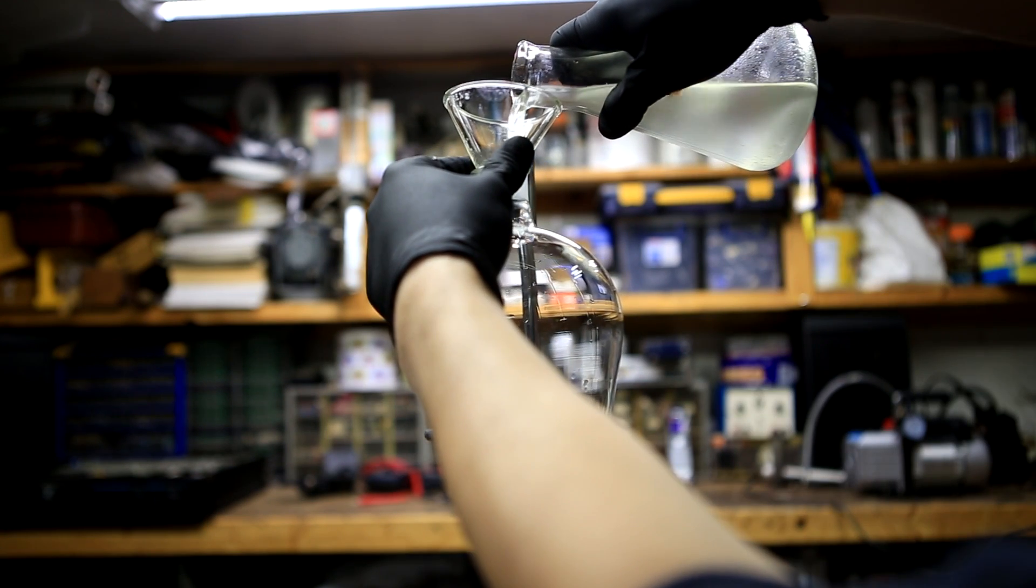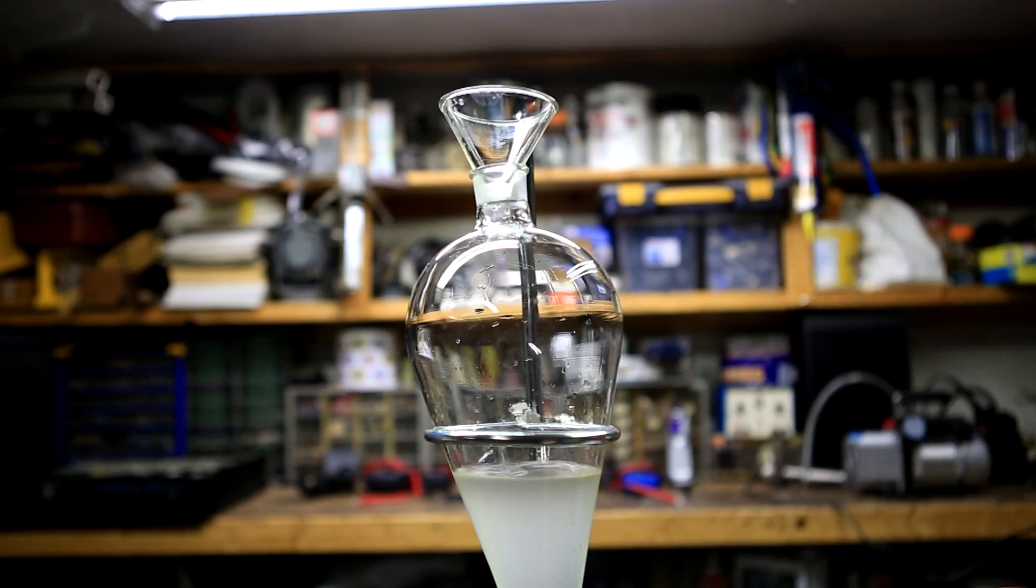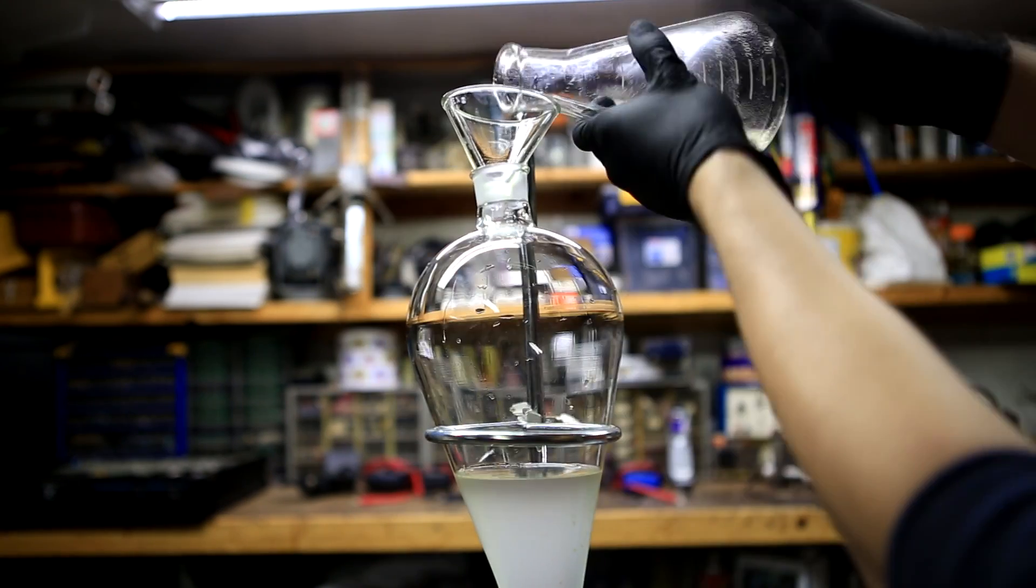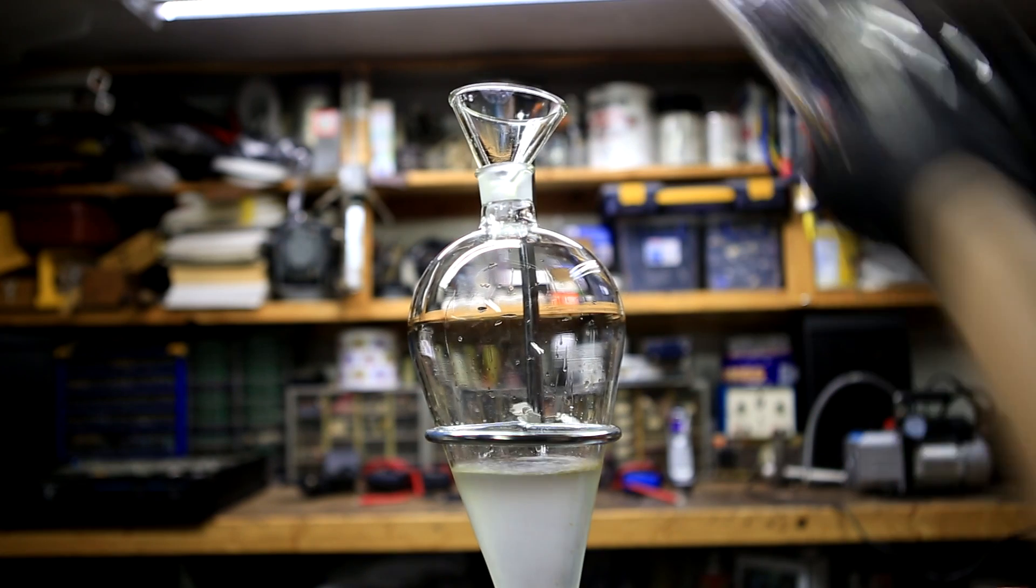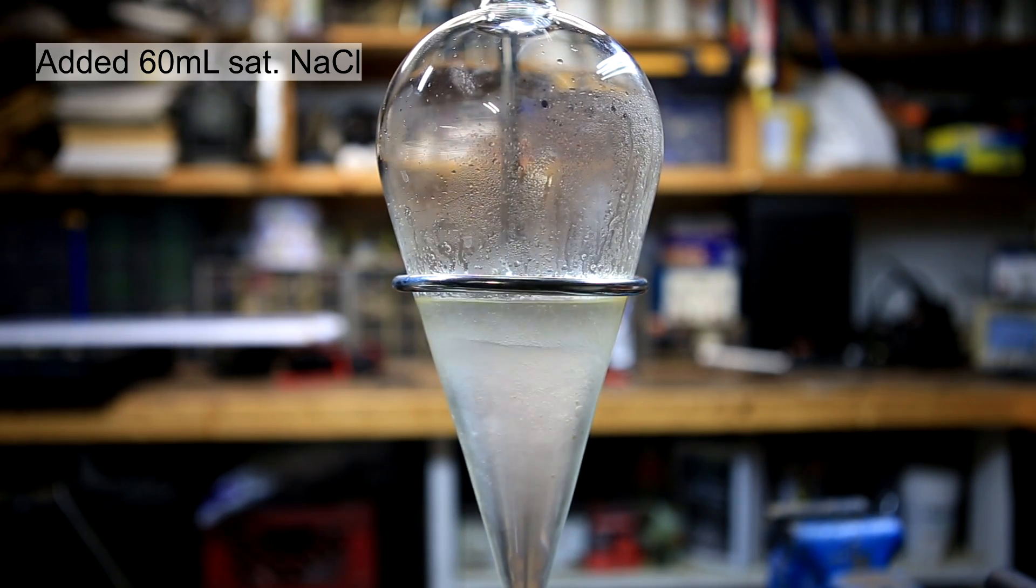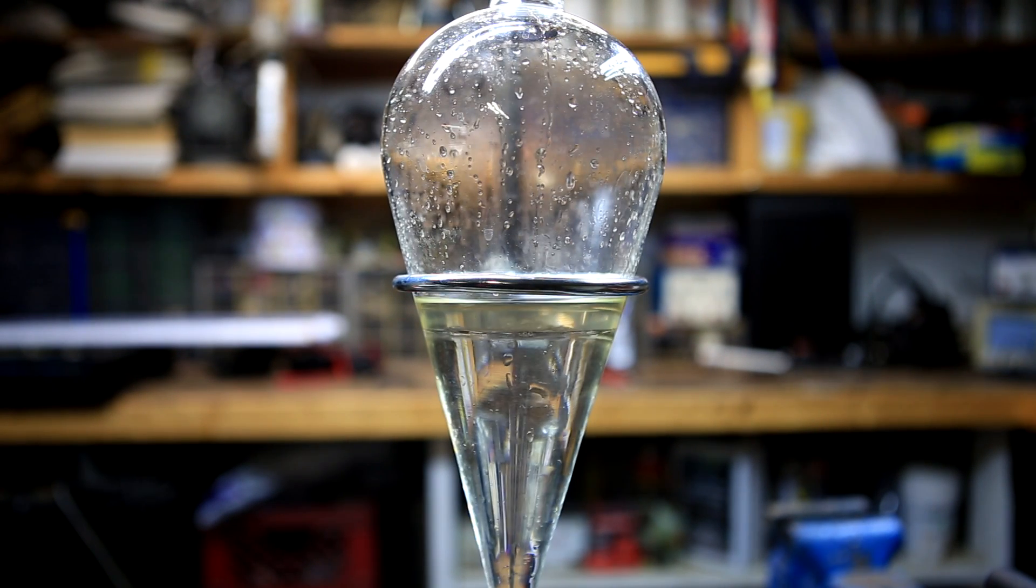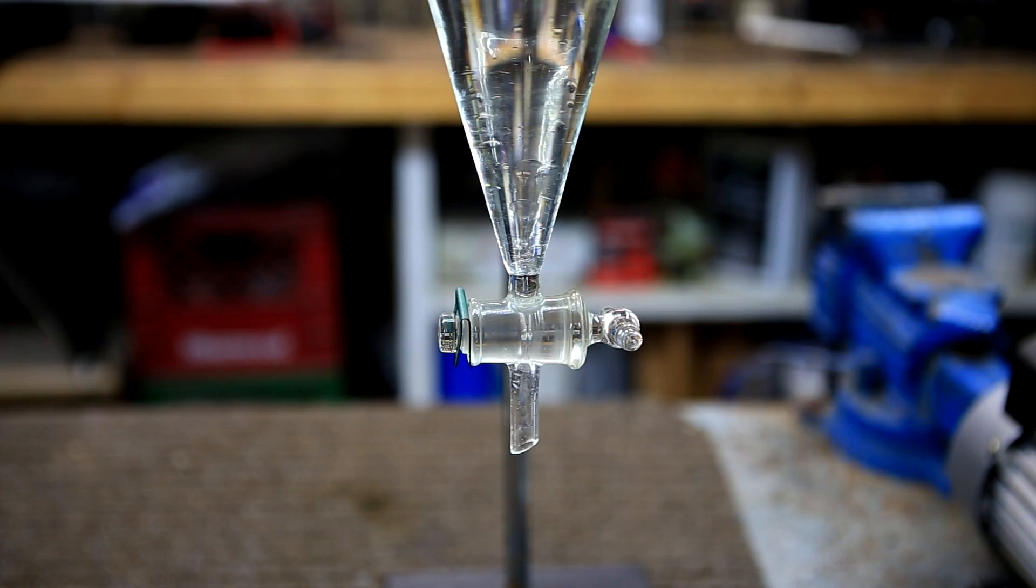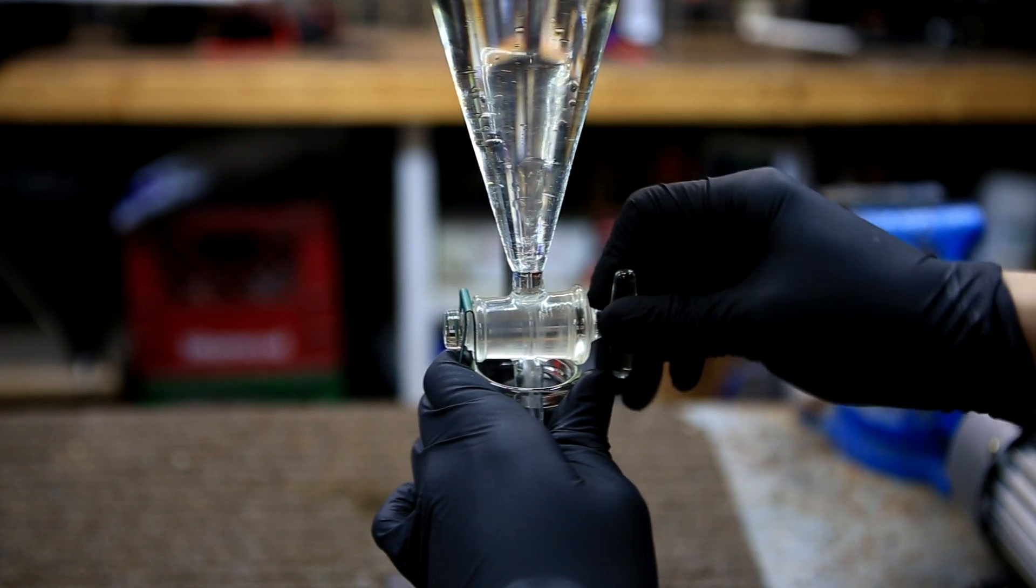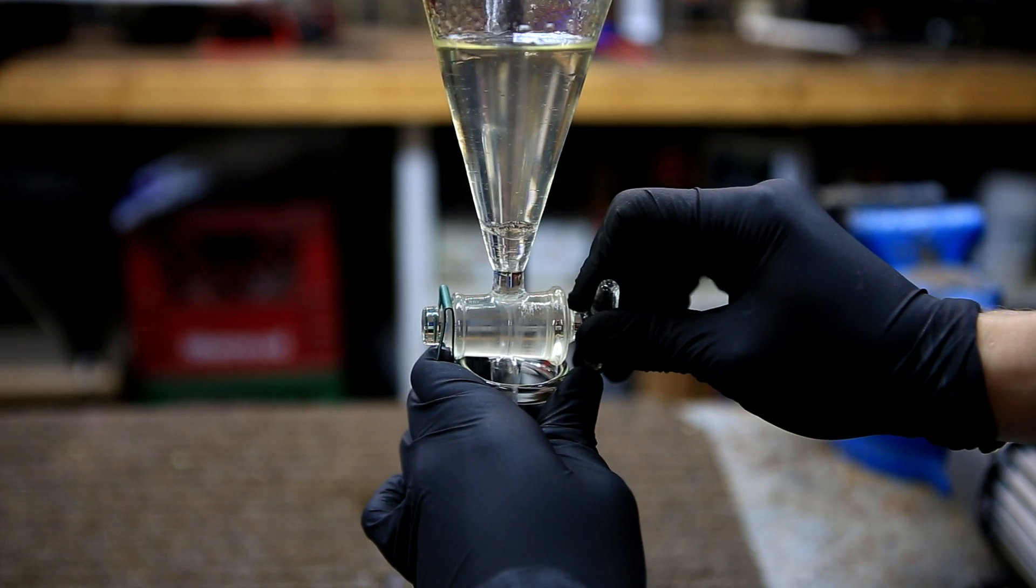The combined dichloromethane layers are re-added to a now clean separatory funnel. The Erlenmeyer flask is washed with a small amount of DCM. 60 milliliters of saturated sodium chloride solution are added to dry the organic layer. After capping and shaking and letting the layers settle, you can see that the DCM layer is much clearer now.